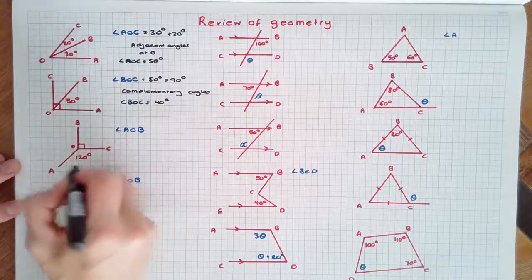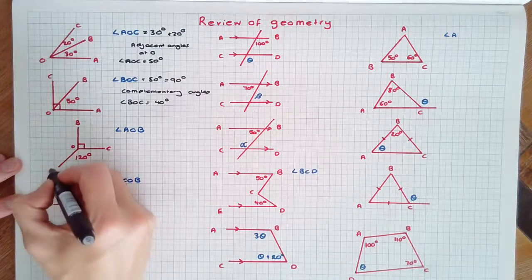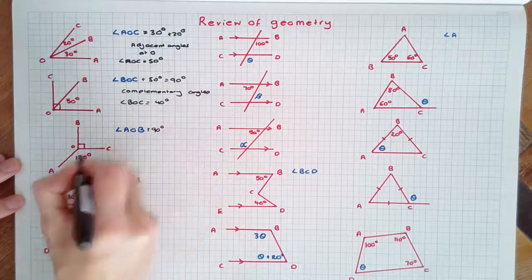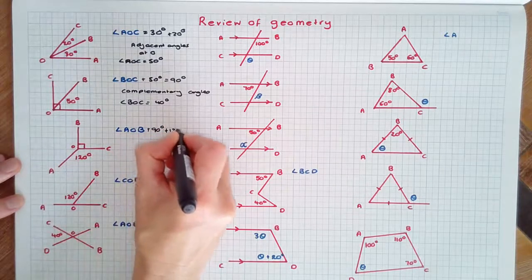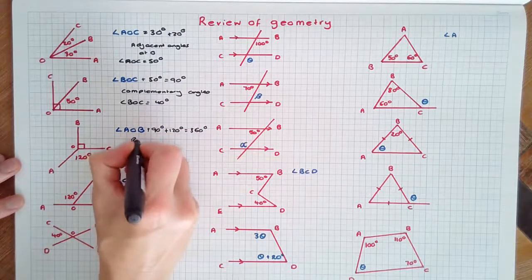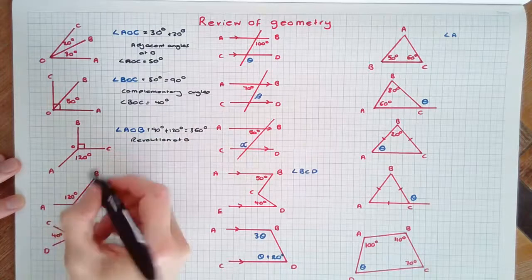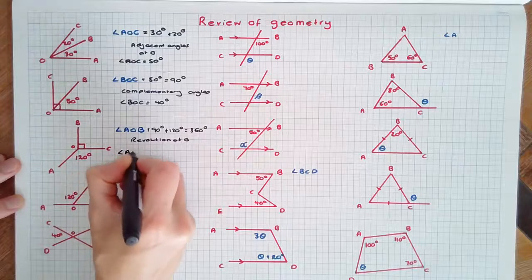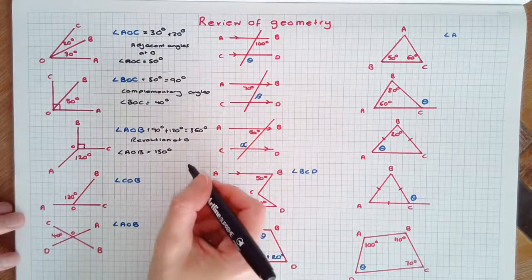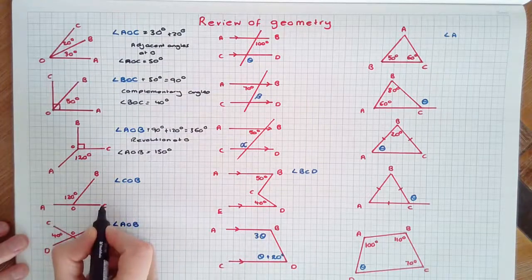Angles in a revolution add to 360 degrees. Therefore angle AOB plus 90 plus 120 will equal 360 degrees because they're a revolution at O. Therefore angle AOB is equal to 150 degrees to make the full revolution.